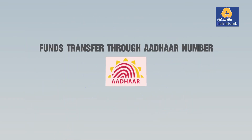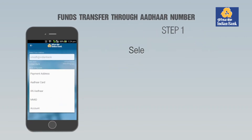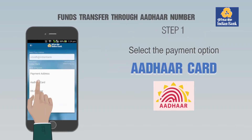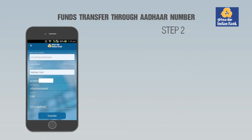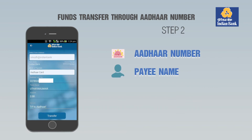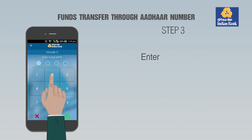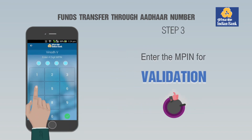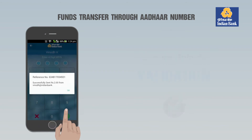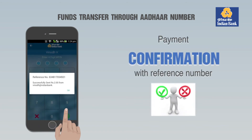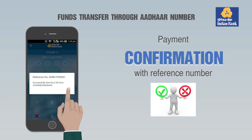Funds Transfer Through Aadhaar Number. Step 1: Select the Payment Option Aadhaar Card. Step 2: Enter the Aadhaar Number, Payee Name, Transfer Amount and Payment Remarks. Step 3: Enter the N-PIN for validation. Payment confirmation with reference number and success or failure message will be displayed.